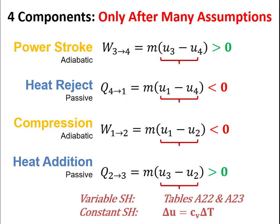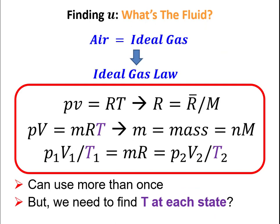There are two ways to find Delta u for an ideal gas working fluid. If we assume variable specific heat — where the temperature change is large enough that specific heat variation matters — we look in tables like A-22 and A-23 in the textbook to find specific internal energy given temperature and pressure. If we use constant specific heat, the cold air standard, then Delta u equals CV times Delta T.